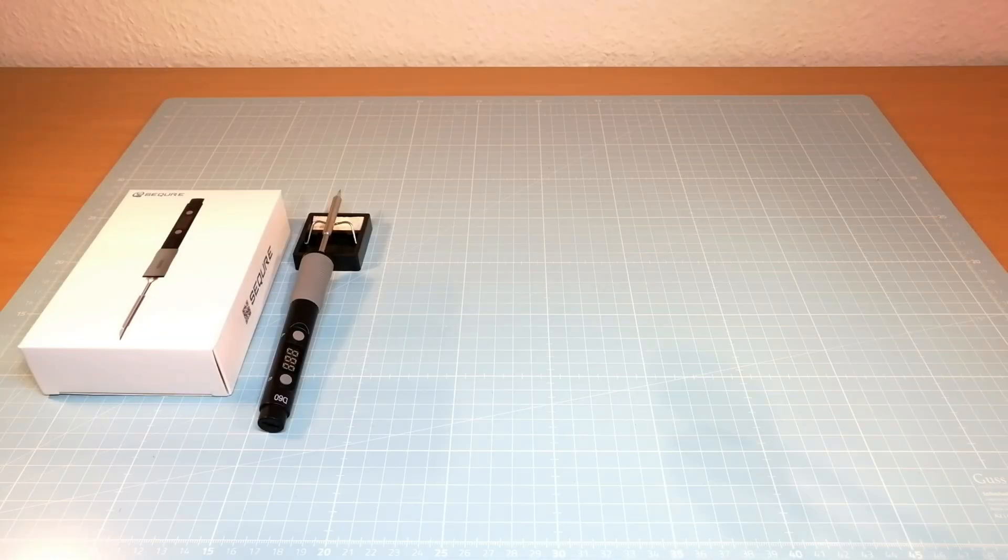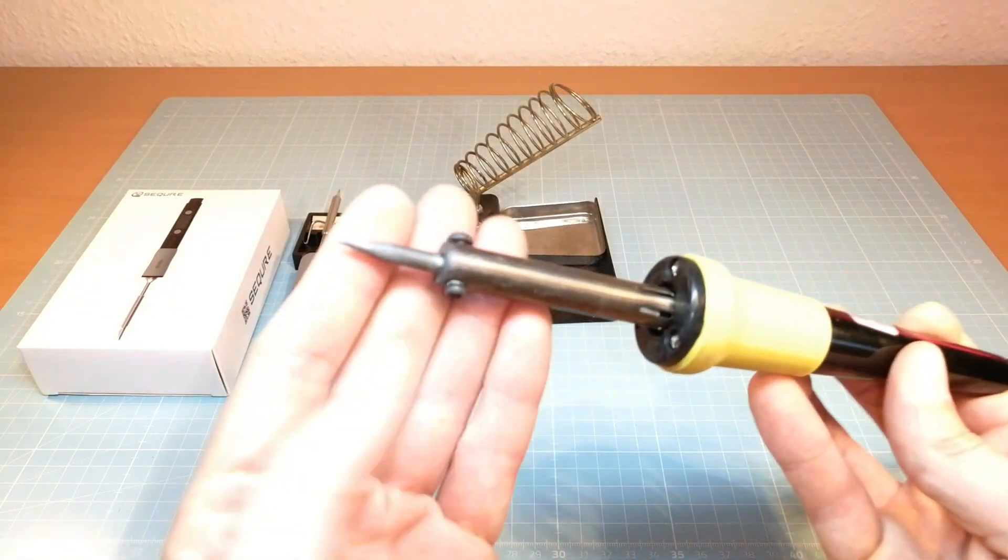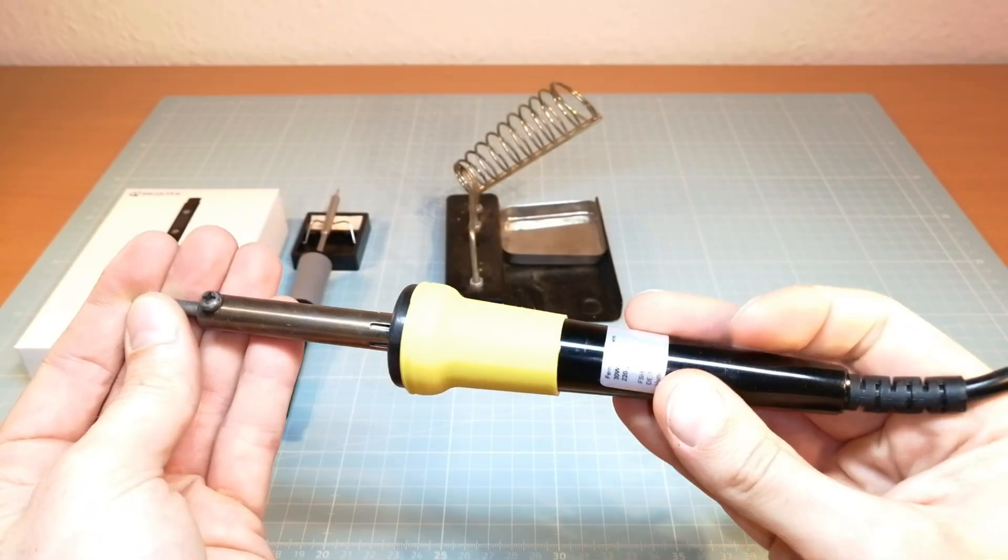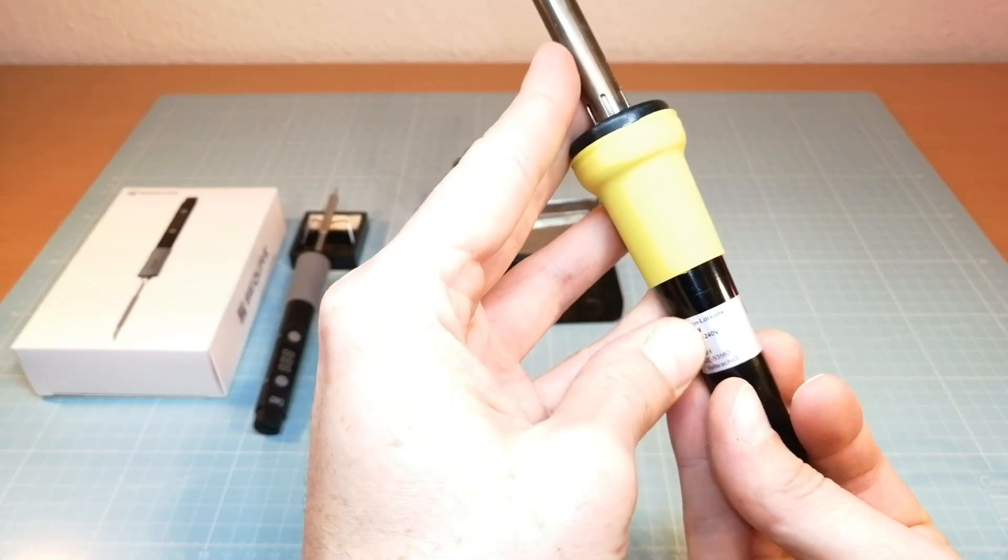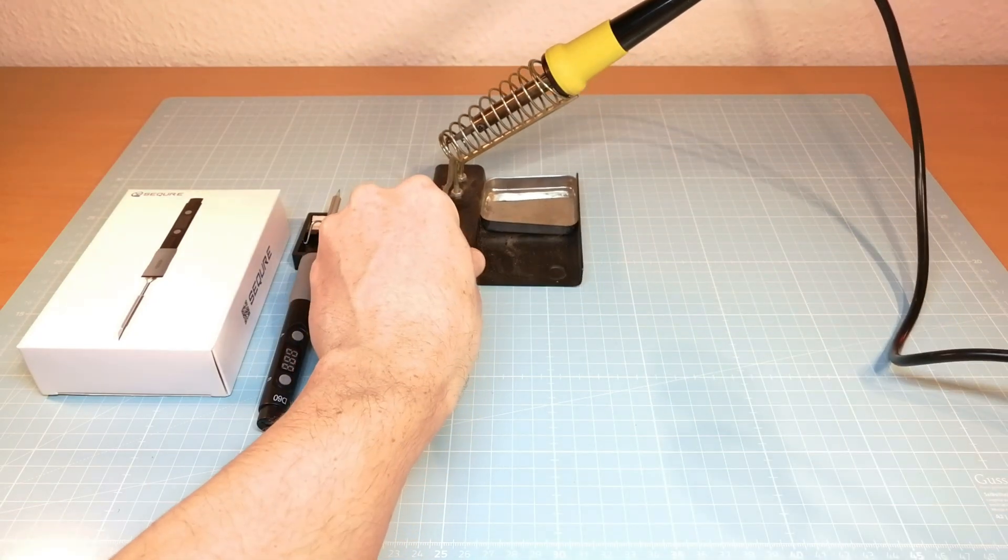Now let's do a quick side by side and size comparison to the soldering irons I have been using so far. For example, that's a soldering iron with a small iron tip and a fixed output power and working temperature I have been using for solder works on the flight controller. Here we have a soldering iron with a higher working temperature and a wider iron tip.